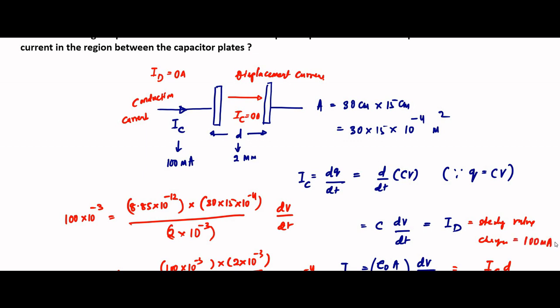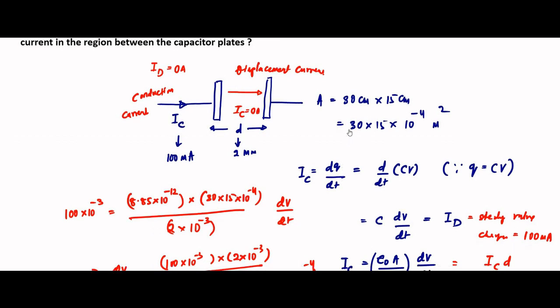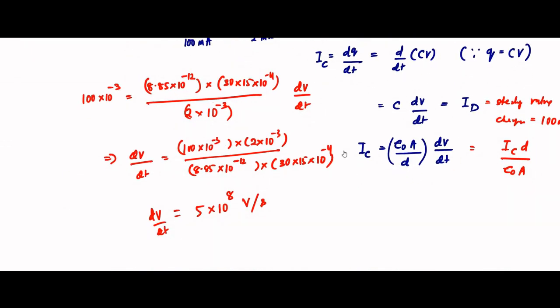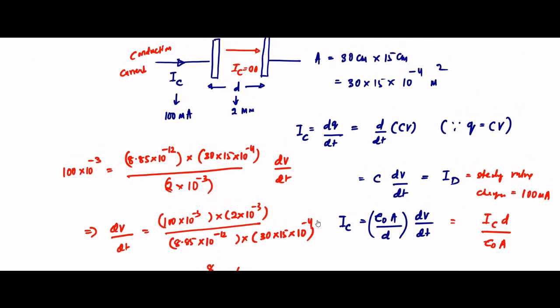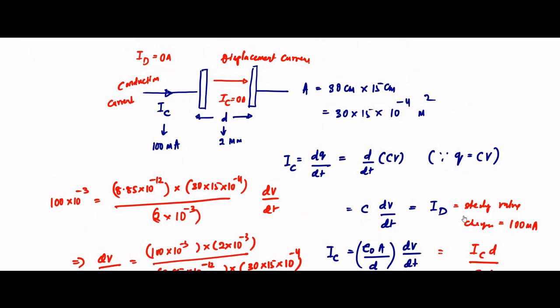So this is the solution. We have determined first the rate of change of electric potential (dV/dt = 5 × 10⁸ V/s) and then the displacement current (ID = 100 mA).